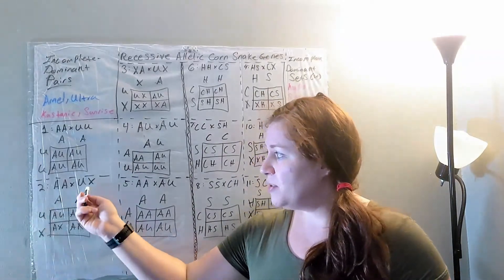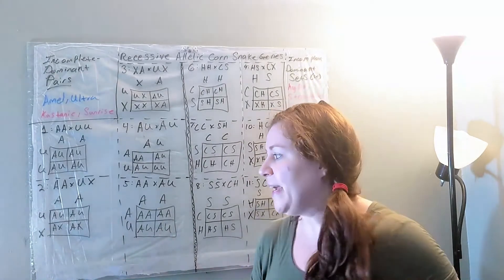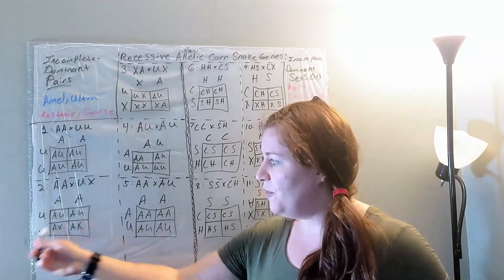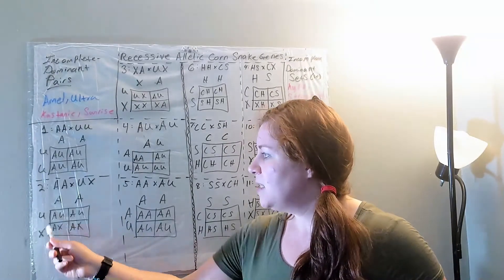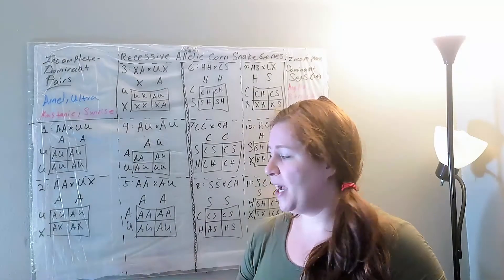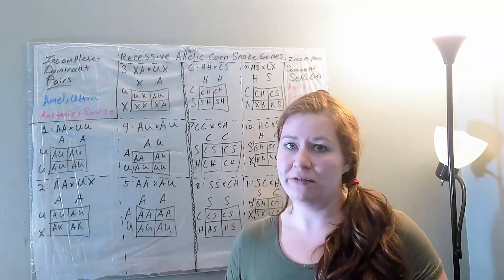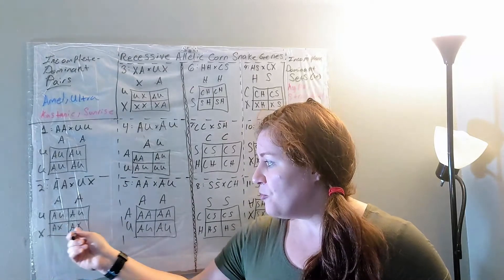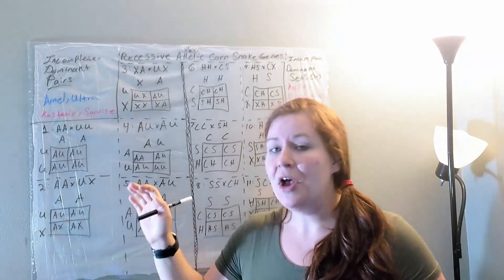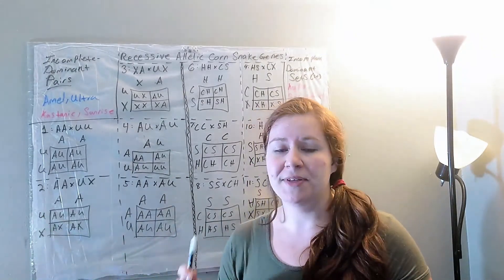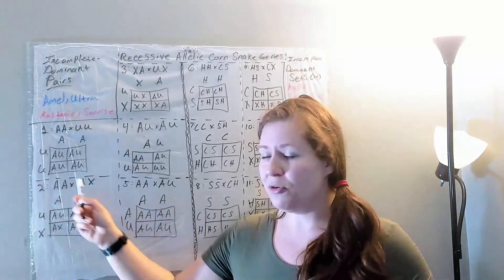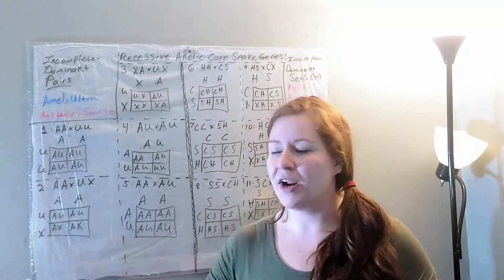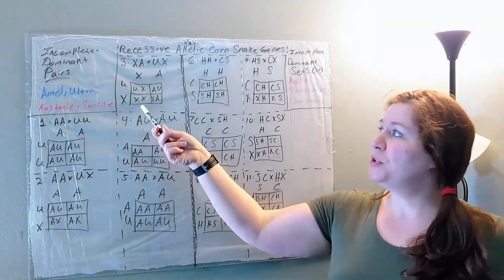Pair number two is an Amel to a het Ultra. You get 50% Ultramels and 50% normals that are het for Amel. The Ultra gene passes on half the time but the Amel gene passes on all of the time, since it's homozygous. So you get half normals that are definitely het for Amel, and then the heterozygous Ultra means 50% of those babies are het Ultra — making half Ultramel and half normal het for Amel.